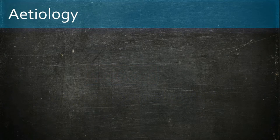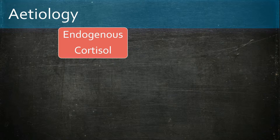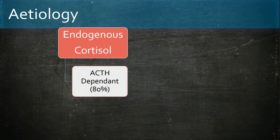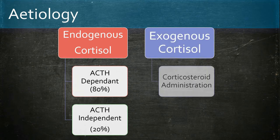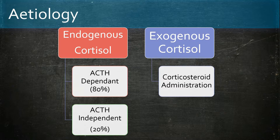The causes of Cushing syndrome are split into endogenous cortisol overproduction and exogenous cortisol administration. With endogenous overproduction, the majority of causes involve excess ACTH, which stimulates the adrenals to produce cortisol. The most common cause, 80% of the time, is excess ACTH production due to a pituitary adenoma, and this results in Cushing's disease.